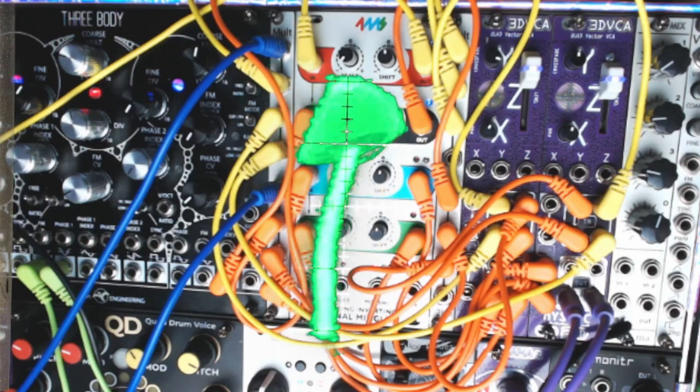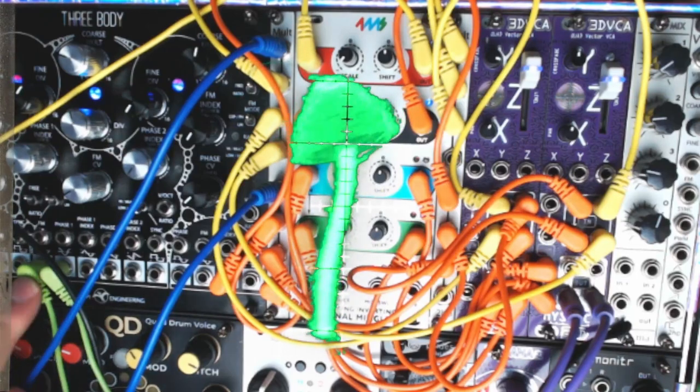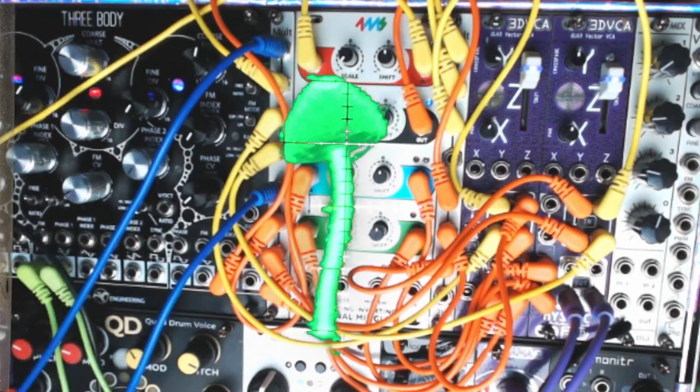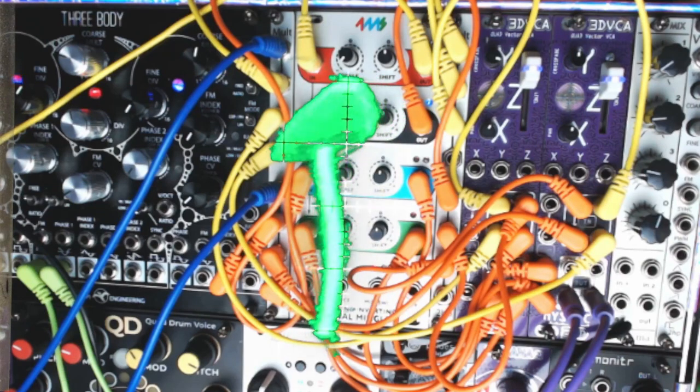Which is where the fantastic Schlappi 3 Body is going to be saving us again. This oscillator has both a sine and cosine output, but there are other LFOs or oscillators that you could use to do that. Any quadrature LFO will have a sine and cosine output.